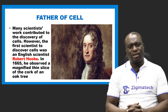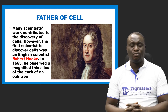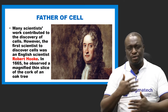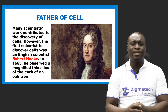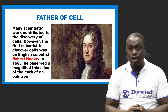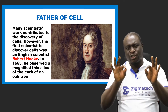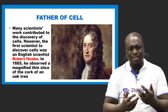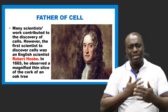Let's look at a brief history of cells. Many scientists contributed to the discovery of cells. The first person to discover cells was an English scientist called Robert Hooke in 1665. He observed a magnified thin slice of the cork of an oak tree and discovered several tiny structures, which he later called cells.